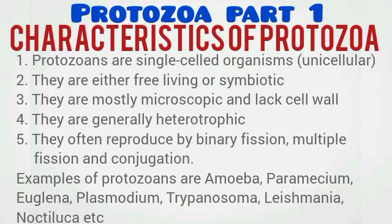The characteristics of protozoa: they are unicellular or single-celled organisms; some are free-living and some are symbiotic. They are microscopic and lack a cell wall — remember they are animal-like. Just like animals, they are heterotrophic; they do not produce their own food like plants. They usually reproduce through binary fission and conjugation.